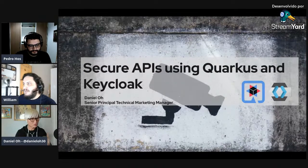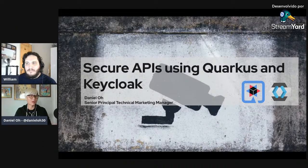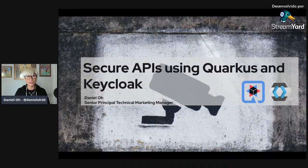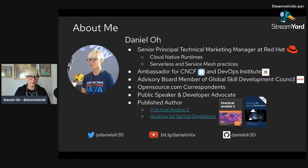Today I'm going to talk about how to secure and protect your cloud-native microservices with a RESTful API using Quarkus and Keycloak, one of the most popular single sign-on open source projects. My name is Daniel Oh, and I'm specialized in serverless and service mesh and cloud-native runtimes like Spring Boot, Node.js, and of course Quarkus.